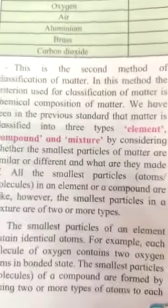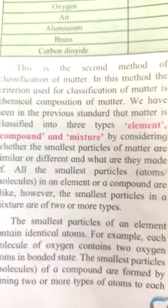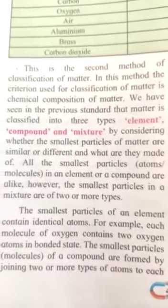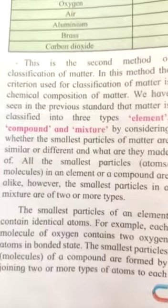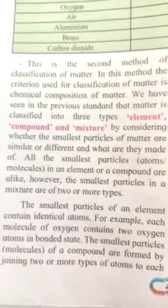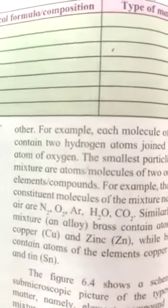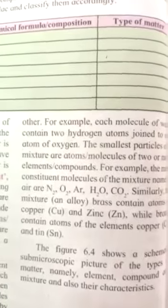Now we will see elements, compounds, and mixtures. They are basically three types. All the smallest particles in an element or compound are alike and the same. The smallest particles of elements are called atoms. Each molecule of oxygen contains two oxygen atoms. The smallest particles of compounds are formed by joining two or more types of atoms. For example, two hydrogen atoms joined with one oxygen atom form water — H2O.